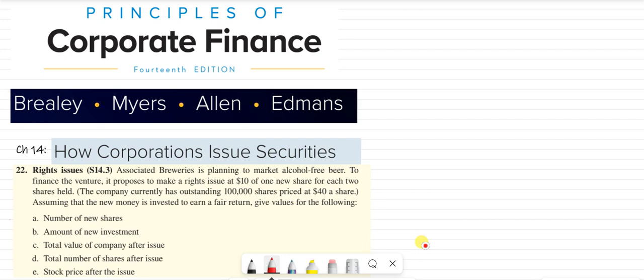Usually the existing shareholders exercise this right because the share is being offered at a discounted price. Question number 22: Associated Beverage is planning to market alcohol-free beer. To finance the venture, it proposes